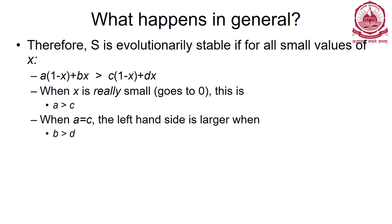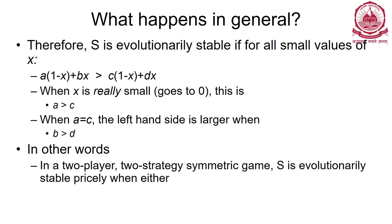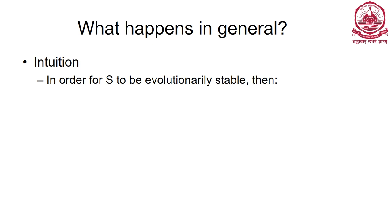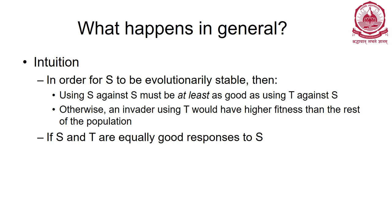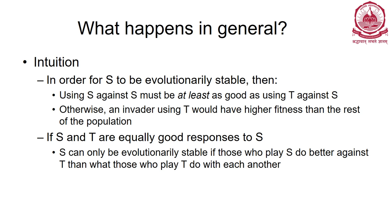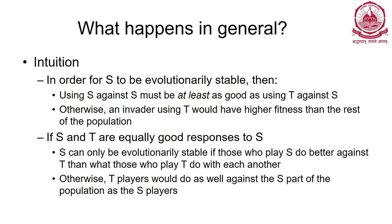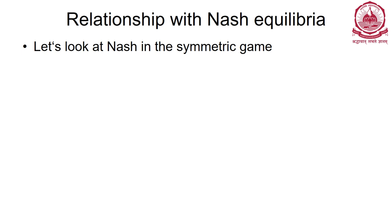So evolutionary stable strategy holds when a > c, or when a = c and b > d - two possibilities. Intuitively, for s to be evolutionary stable, using s against s must be at least as good as using t against s; otherwise an invader t will have higher fitness. And if s and t are equally good against s, then s is evolutionary stable if players playing s do better against t than those playing t do against each other.